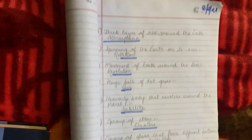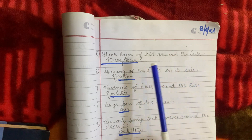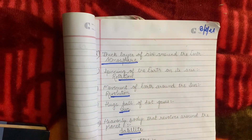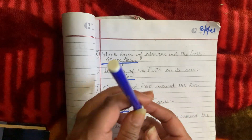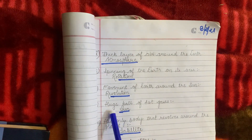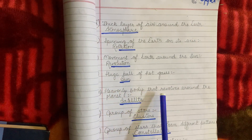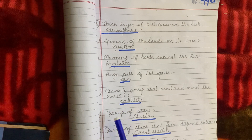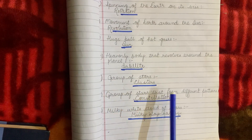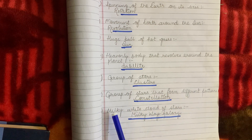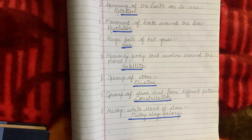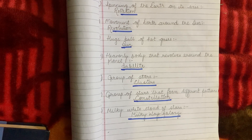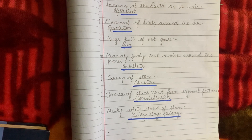Alright, we'll repeat it once again. Thick layer of air around the earth is atmosphere. Spinning of earth on its axis is rotation, and movement of earth around the sun is revolution. Huge ball of hot gases is sun. Heavenly body that revolves around the planet is a satellite. Group of stars is known as cluster, and group of stars that form different patterns in the sky is a constellation. Milky white cloud of stars is known as Milky Way Galaxy, because when through a telescope we look at the sky we can see a cloud of stars that is completely milky white in color.